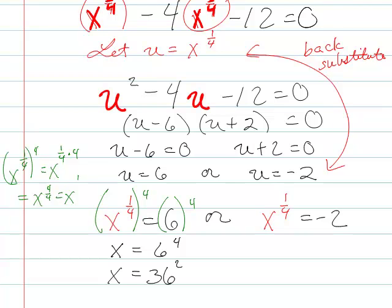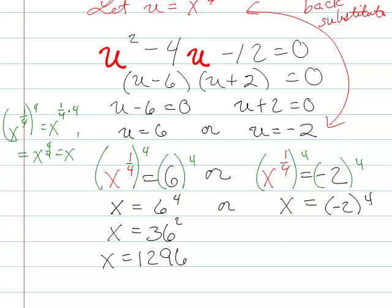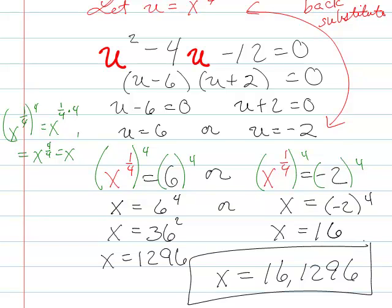Which is something like 1296, which was not really intentional to make the number that ugly. Okay, raise both sides to the 4th power. So x equals negative 2 to the 4th. So x equals 16, positive 16. So x is equal to 16, or 1296. And that is the joy of quadratic substitution.